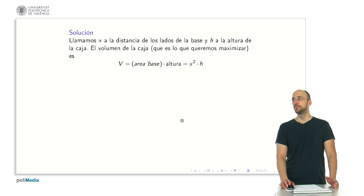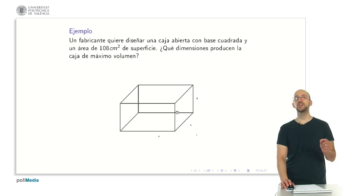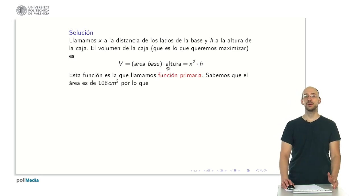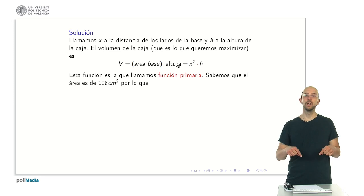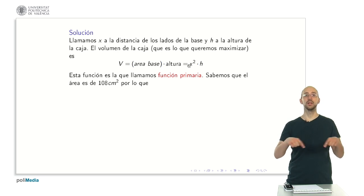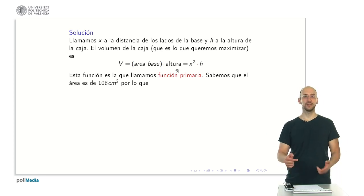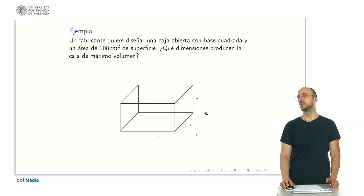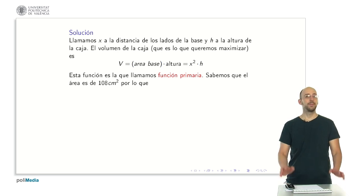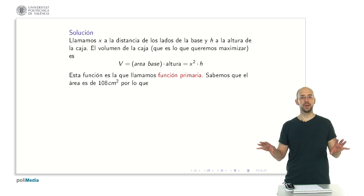The primary objective is to maximize the volume. The volume function is calculated by multiplying the base area by the height. The base area is a square, so its area is x squared. Multiplied by the height h, the volume is V equals x squared times h. We have established the primary function — the volume function — which is our target for maximization.